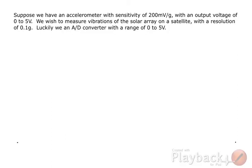Suppose we have an accelerometer with sensitivity of 200 millivolts per g with an output voltage of 0 to 5 volts. We wish to measure vibrations of the solar array on a satellite with a resolution of 0.1 g. Luckily, we have an analog to digital converter with a range of 0 to 5 volts.